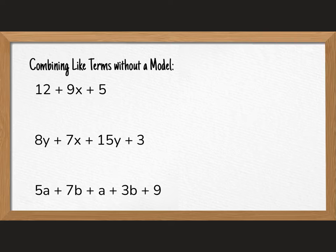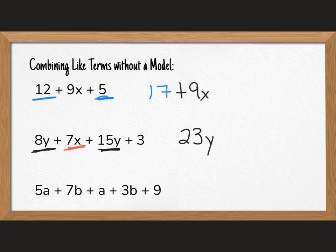Let's do a few without the models. So I'm going to use the idea of color coding to help us better understand. If I'm looking at the number 12, it is just a number. 9x has a variable, and then 5 is just a number. So 12 plus 5 gives you 17, and then the 9x would just say plus 9x. Then if I'm looking here, I have 8y and 15y are the same, which would make a total of 23 y's. And then I have a 7x, and then 3 is just a number. So I would just write this as 23y plus 7x plus 3.